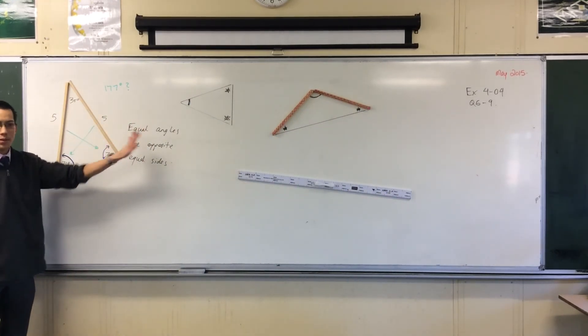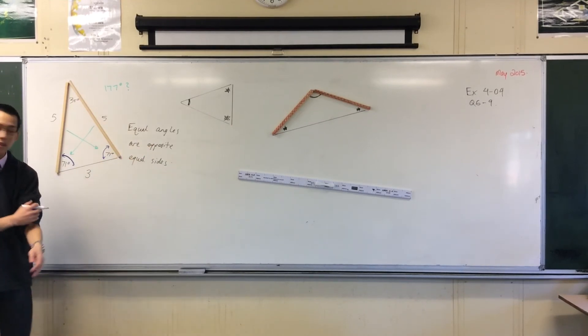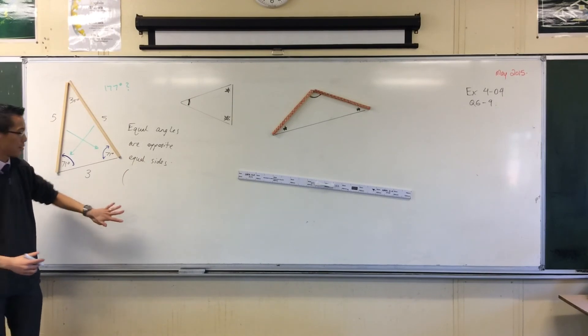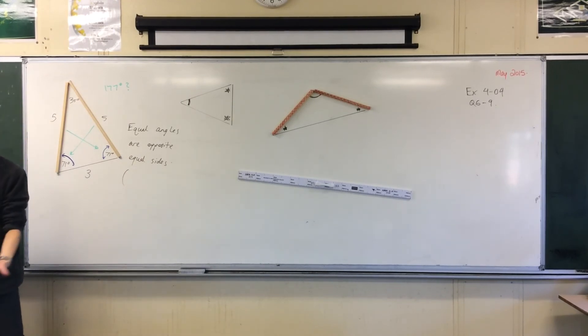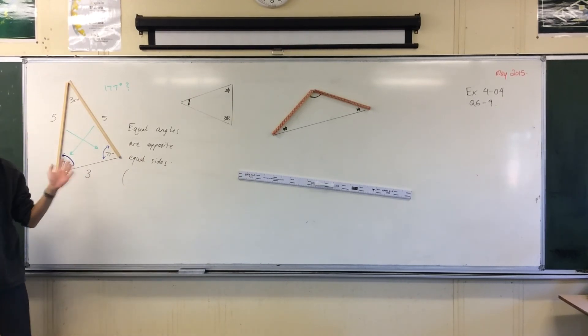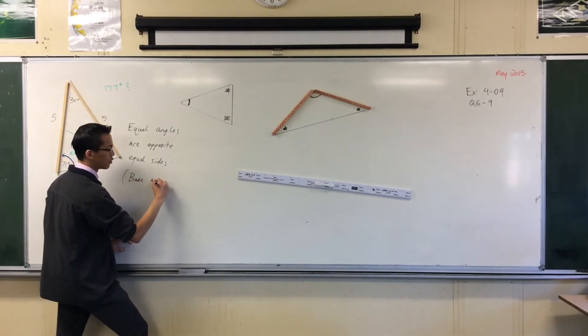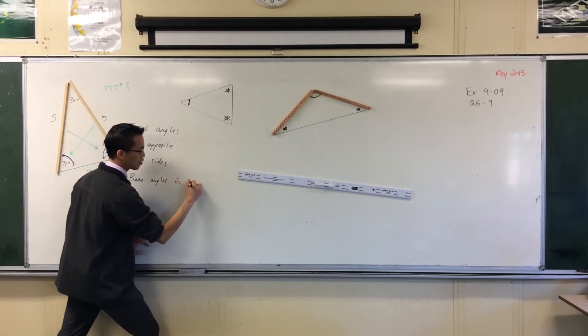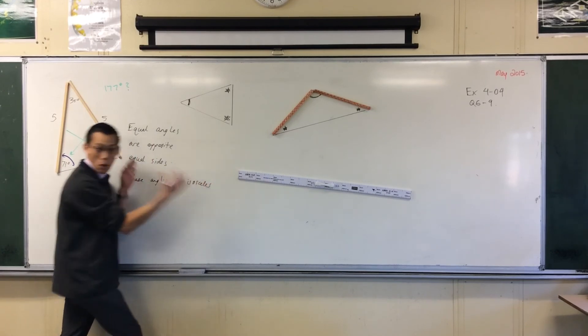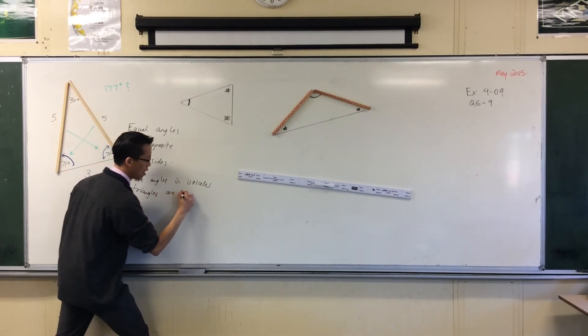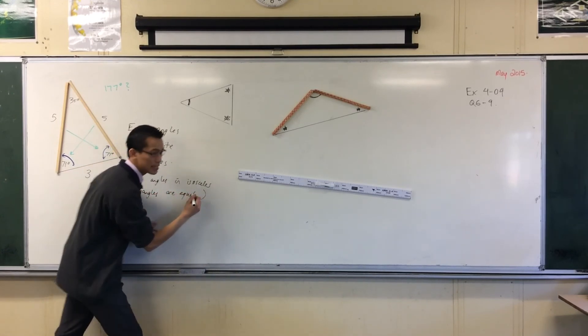Equal angles are opposite equal sides. You will see this written another way as well. So you can put this underneath. We've been making isosceles triangles, so sometimes this gets called the reason is that base angles in isosceles triangles—because that's what we're working with—base angles in isosceles triangles are equal. It's the same idea.